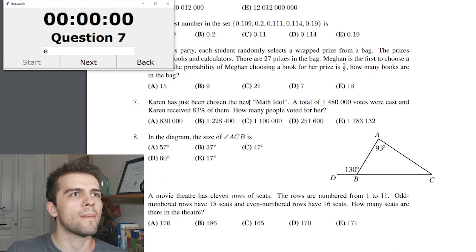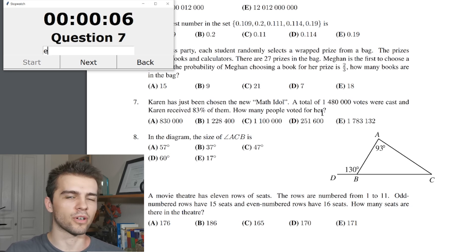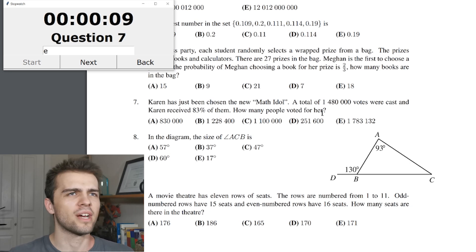Karen has just been chosen the new math idol. A total of a million, blah, blah, blah, votes were cast. Karen received 83% of them. How many people voted for her? Now, I don't have a calculator here. So, this is going to be some mental math. 83%, hmm, that's about, that's going to be more than 200,000 for sure.